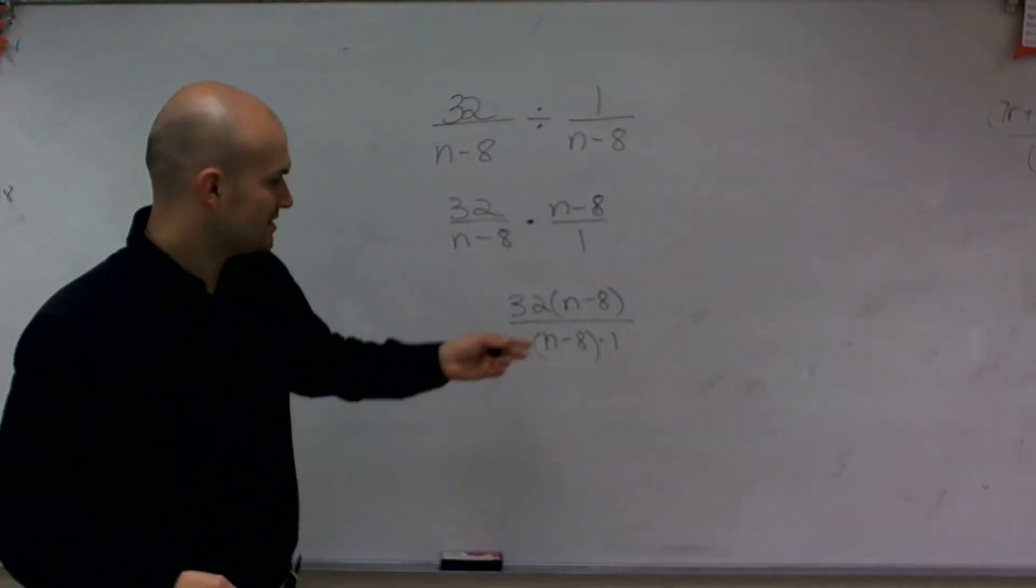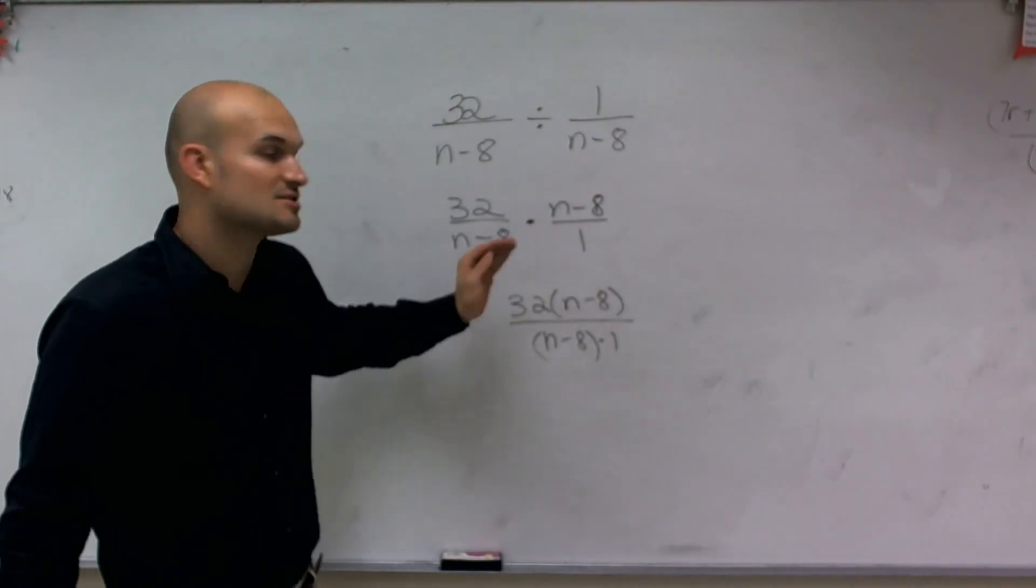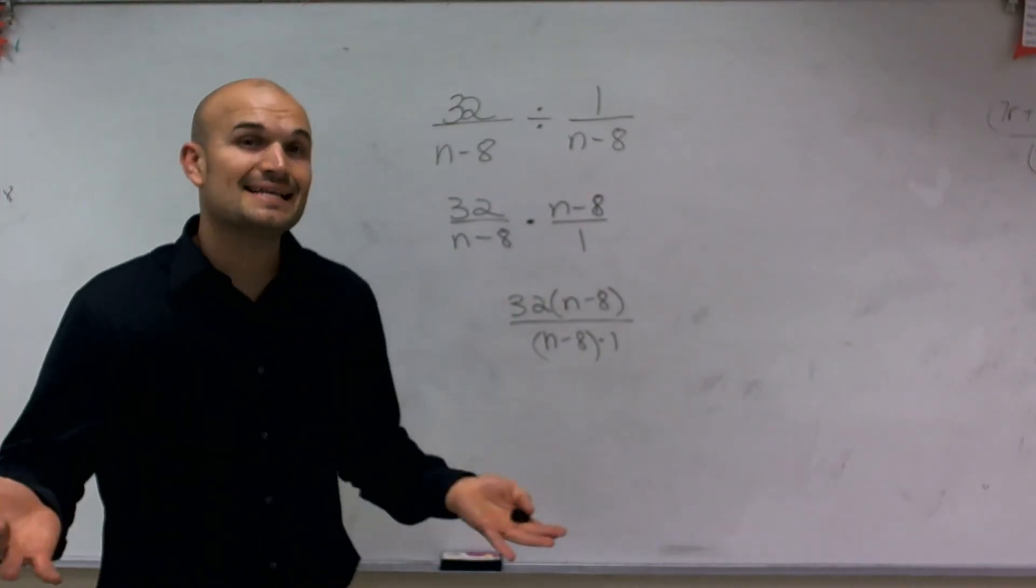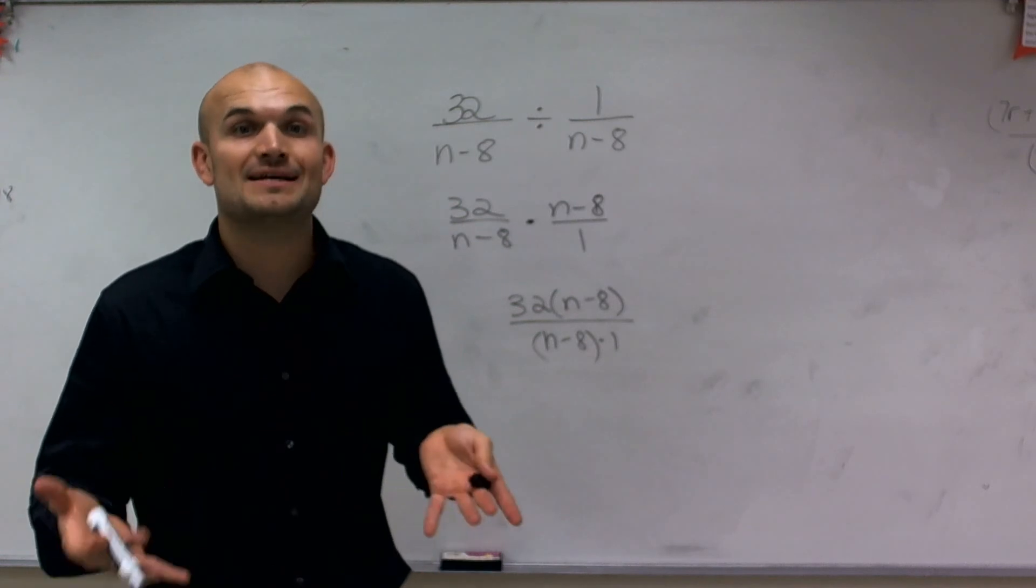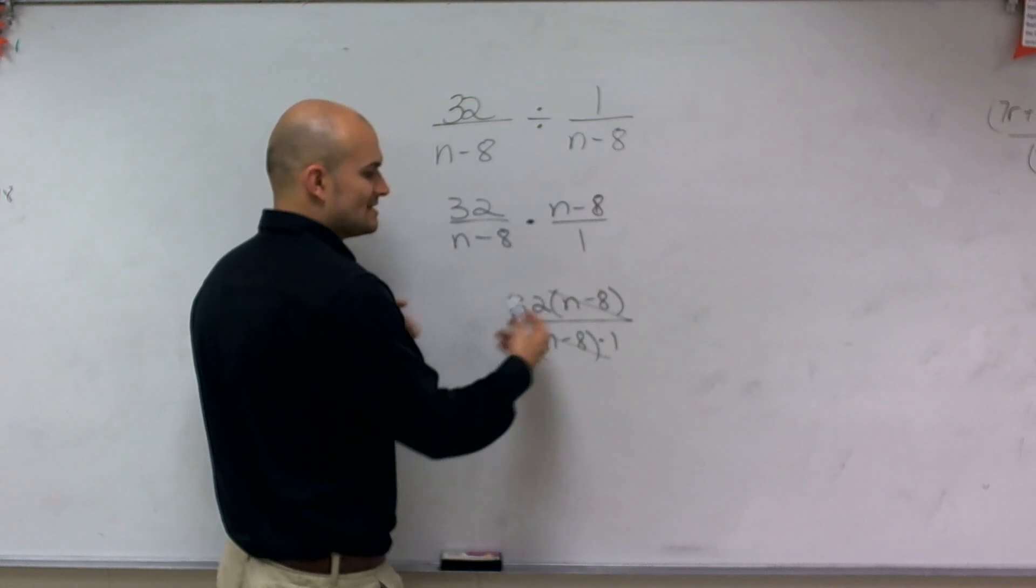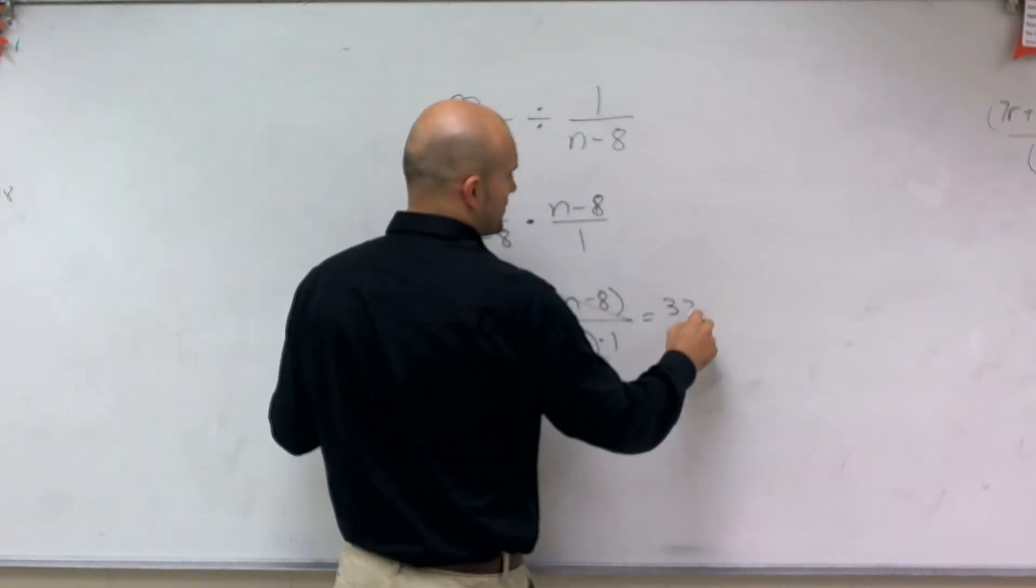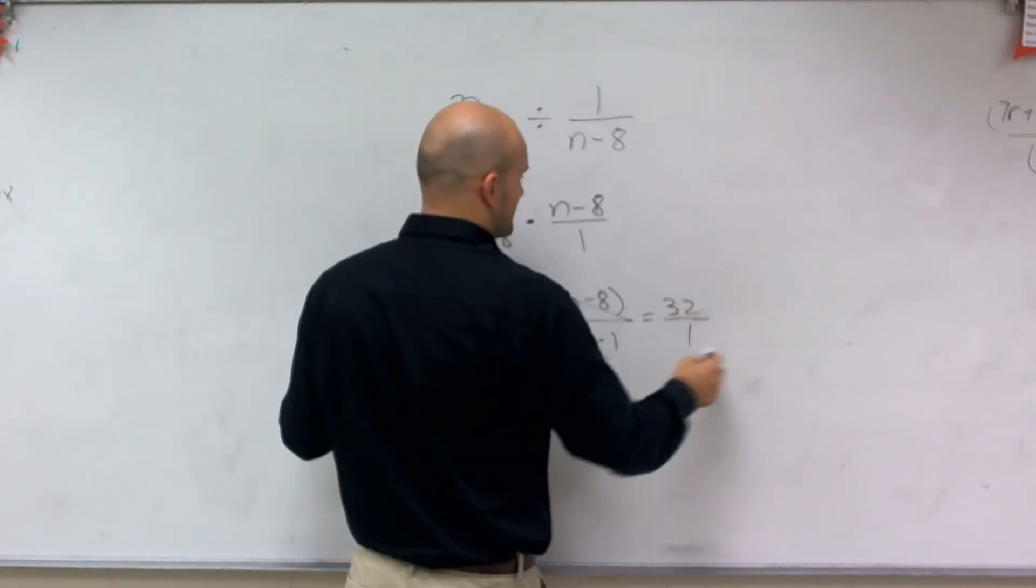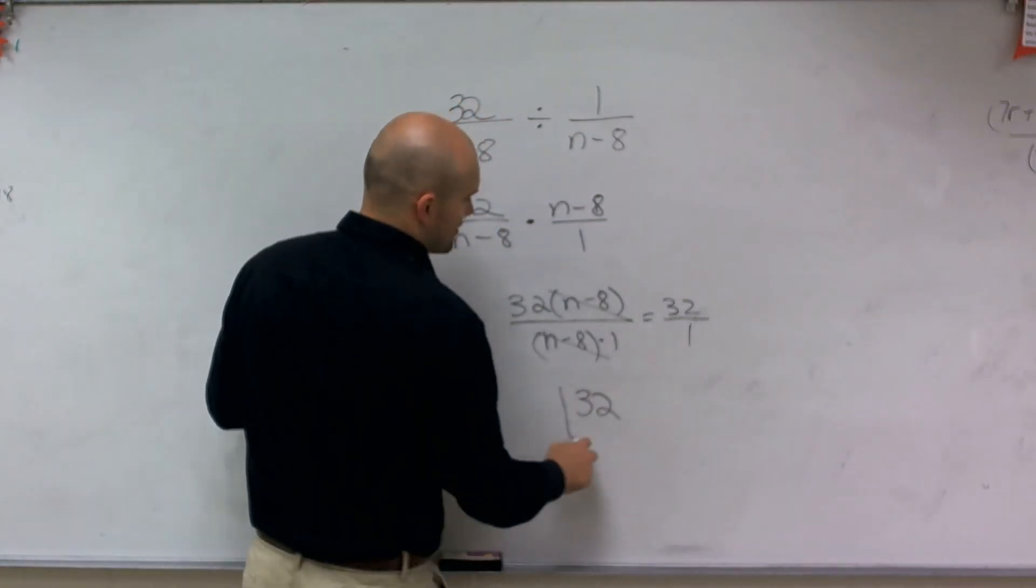what I can see here is I'm dividing n minus 8, which is the exact same expression as n minus 8. Any number or any expression divided by itself is going to equal 1. And 1 times anything is just going to leave you with that anything. So therefore, I'm left with 32 divided by 1, which is just 32.